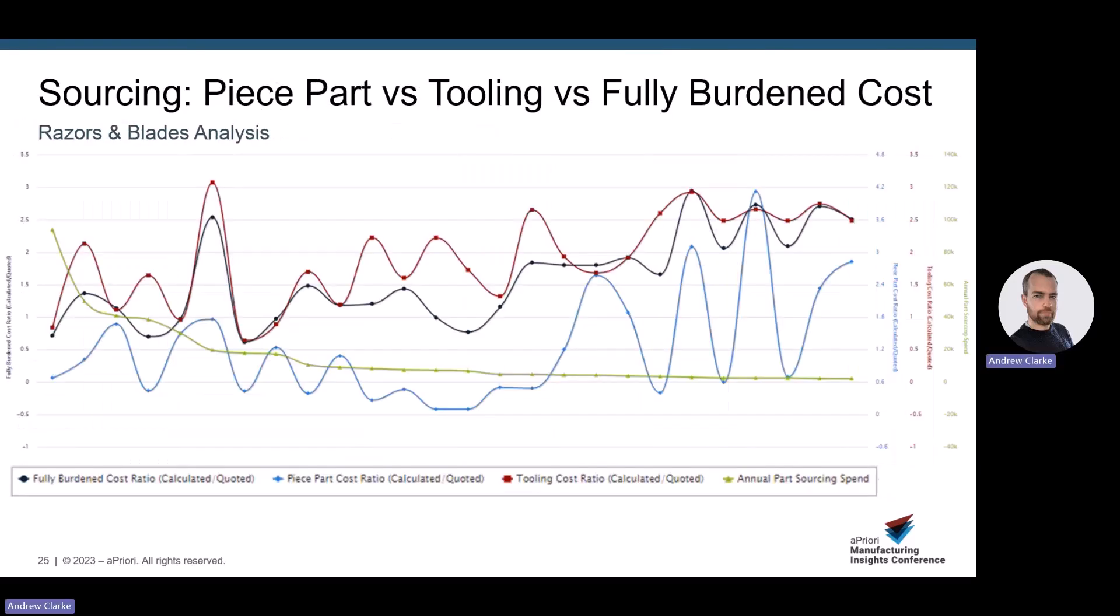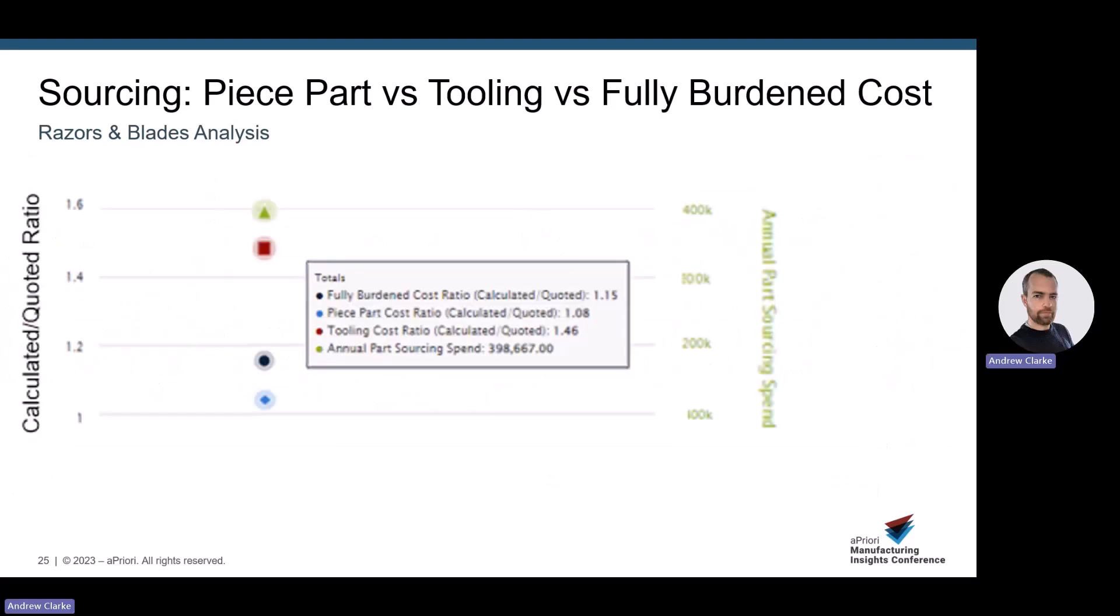Additionally, why don't we try doing a razors and blades analysis of your plastic molded part spend. Help identify if any suppliers are hooking you with loss leaders and making their money back elsewhere. AP Analytics allows you to aggregate data to inform yourselves on the reality of your business transactions with your supply base and negotiate where applicable. In this example, we can see that even though we have great parity on piece part costs, we're potentially being overcharged on tooling and ultimately overcharged overall by an additional 15%.